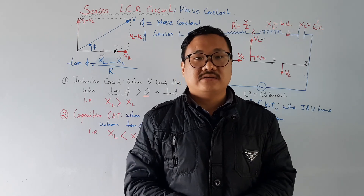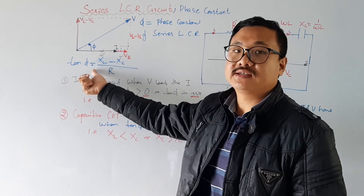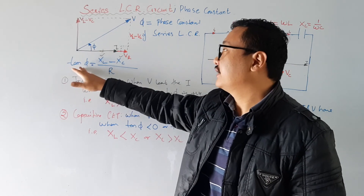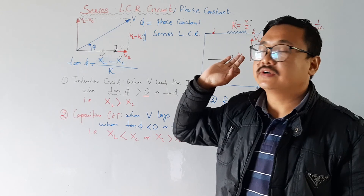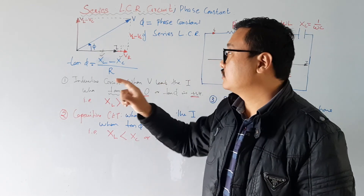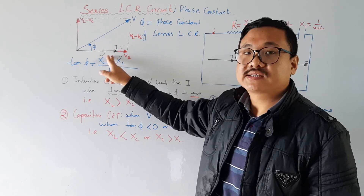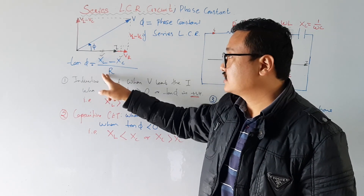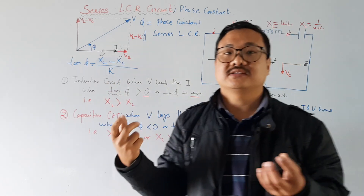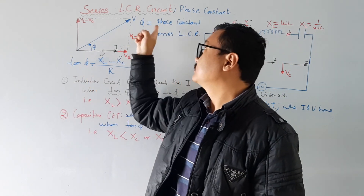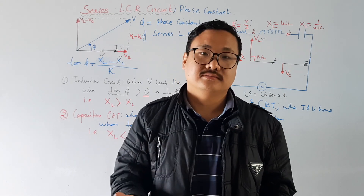One final point: the SI unit of tan φ is nothing — it is a dimensionless, unitless quantity. This is because XL, XC, and R all have the unit ohm, and ohm divided by ohm gives no unit. So tan φ, the phase constant, is a unitless quantity. Thank you.